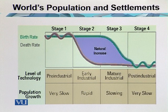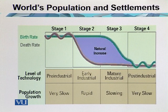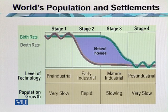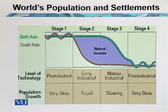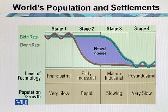In the early industrial era, the birth rate remained similar but the death rate fell, because some life-saving drugs came to market. In stage three, the mature industrial stage, we see a sudden decline in birth rate, and population growth appears slow because market availability and production rose, and birth rate also decreased due to increased awareness.